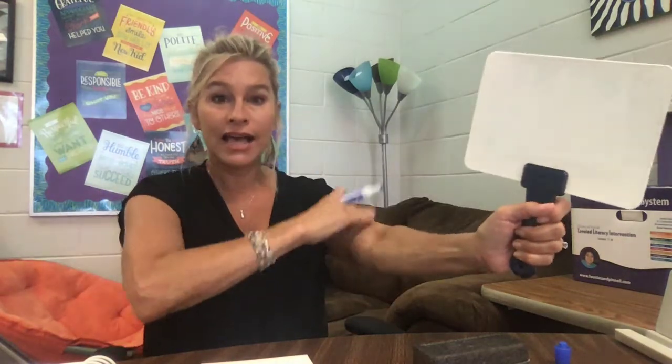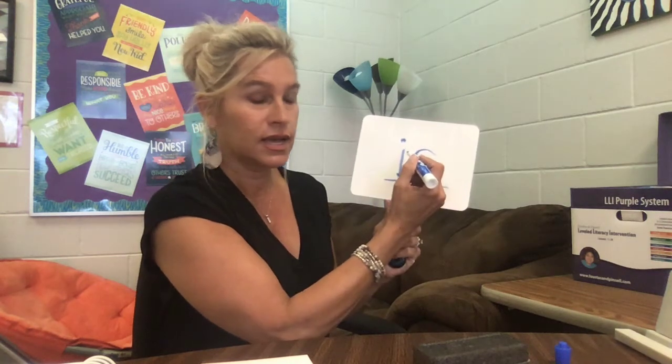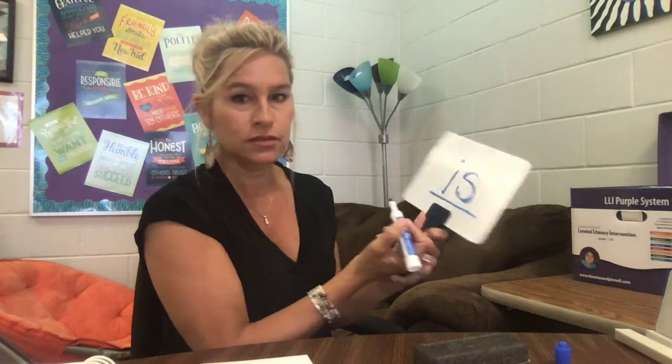Let's do 'is.' Load it: 'is,' tap it: I-S, 'is.' Again — load it: 'is,' tap it: I-S. One more time — 'is,' spell it: I-S. Now let's write it: I-S. Trace it: I-S, 'is.' Trace it again: I-S, 'is.' Very good! I hope this is not backwards!